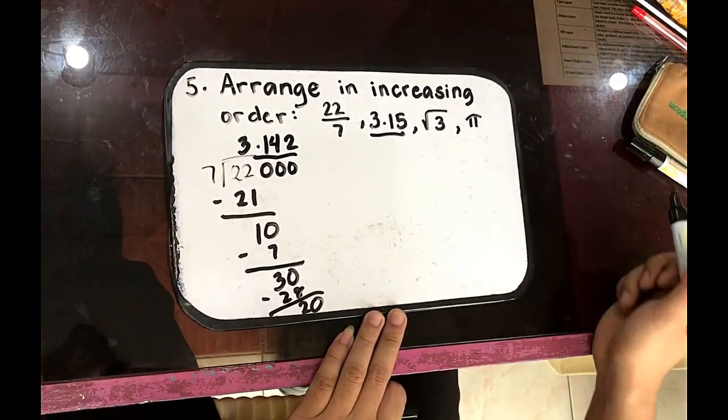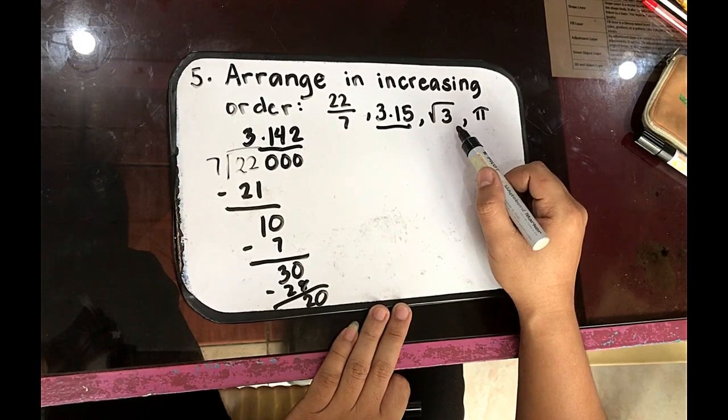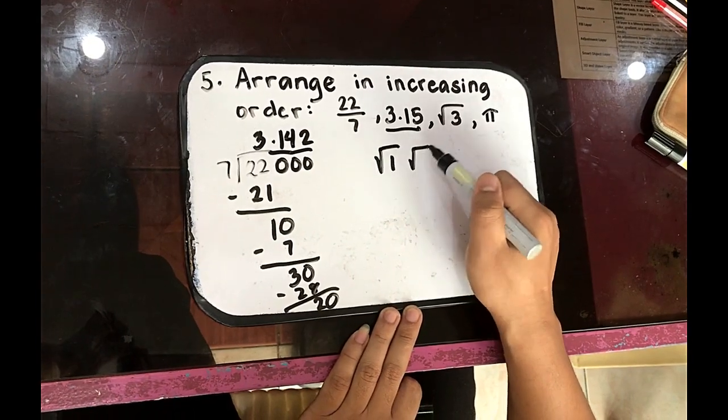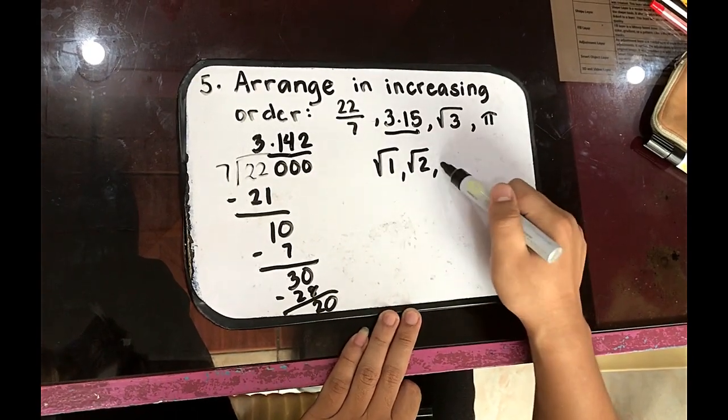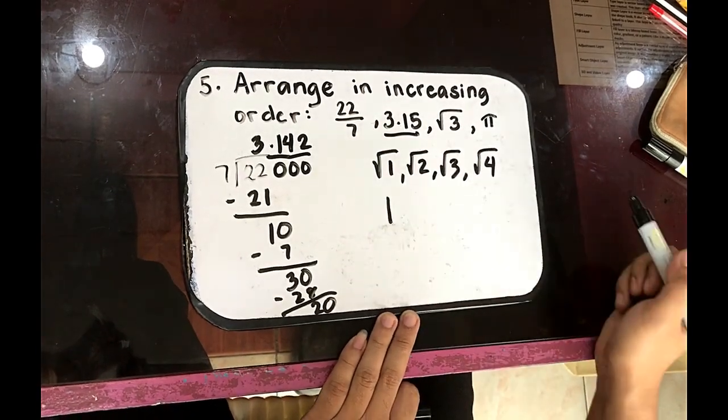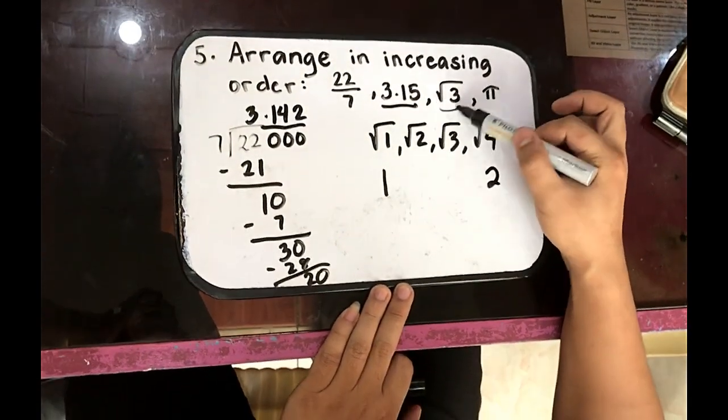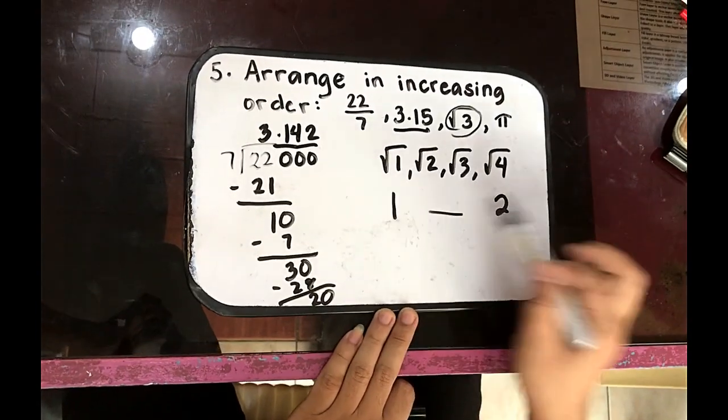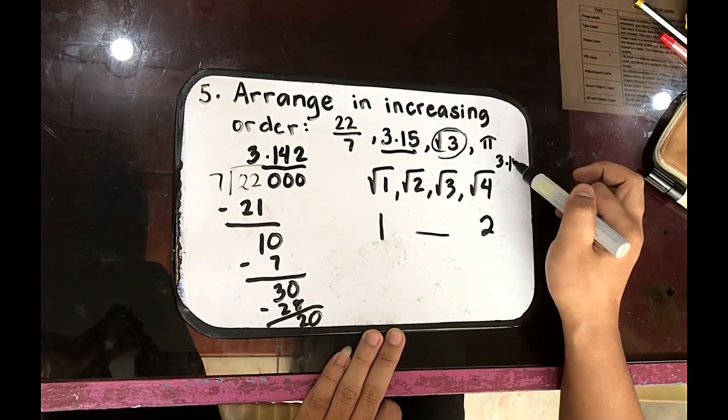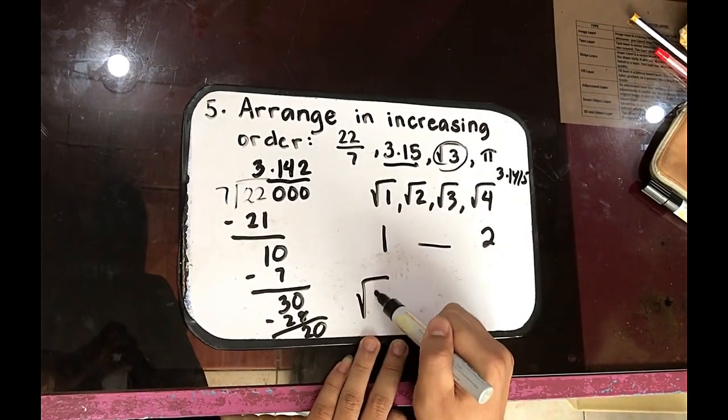We have 3.15. The square root of 3 is between the square root of 1 and the square root of 4. We know that the square root of 1 is 1, the square root of 4 is 2. That means the square root of 3 is between 1 and 2. So that would be our lowest because pi is 3.1415. So let us arrange. The square root of 3 is the lowest.